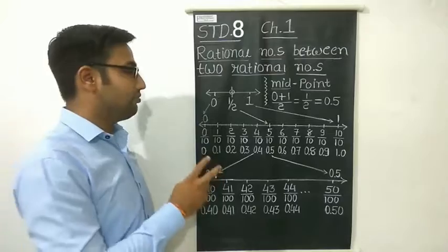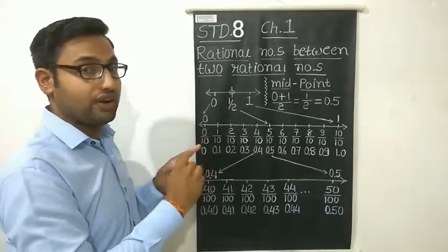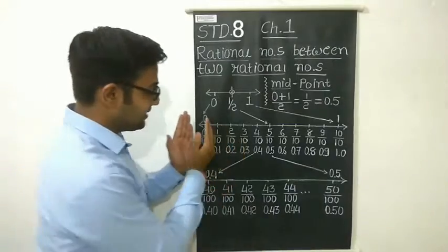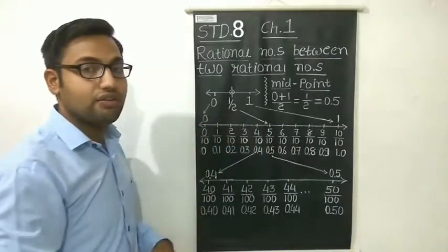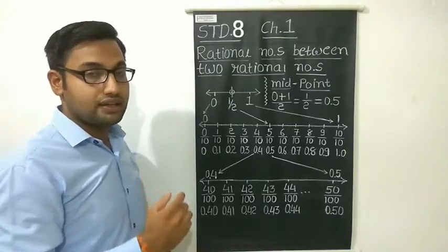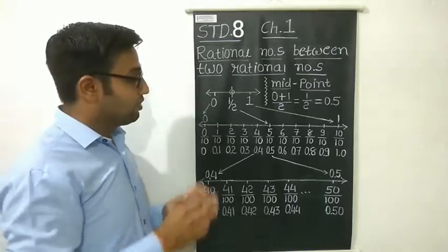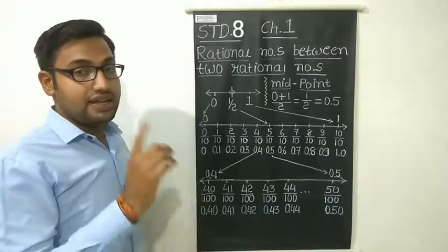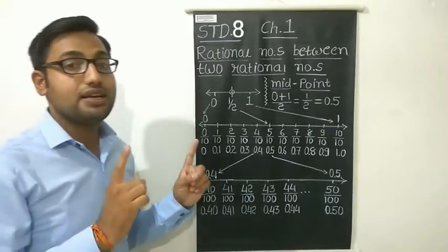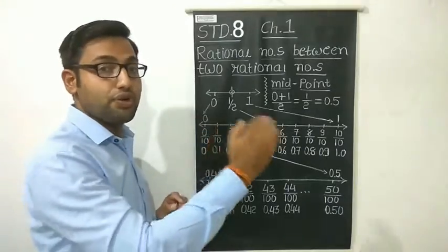Is there only one number between 0 and 1? No. Actually, there are many numbers between 0 and 1. To understand this, we will magnify this portion between 0 and 1. By magnifying, we can see there are 10 numbers between 0 and 1. In your scale, you have seen that in 1 cm there are 9 arcs, making 10 parts. One part is called 1 mm, and 10 mm equals 1 cm. In the same way, between 0 and 1 we can get 10 numbers which are equidistant from one another.